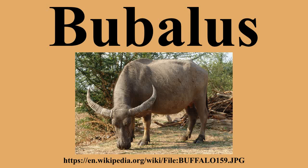The valid names: the 2013 checklist of the Catalogue of Life lists as accepted five species by nomina in the genus Bubalus — Bubalus bubalis, Bubalus depressicornis, Bubalus mephistopheles Hopwood 1925, Bubalus mindorensis, and Bubalus quarlesi. Bubalus arnee is not listed. The Integrated Taxonomic Information System lists the same five species by nomina as valid.